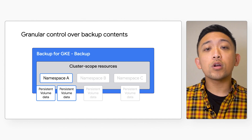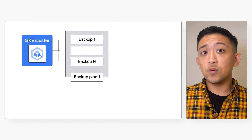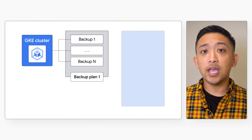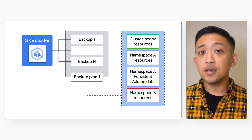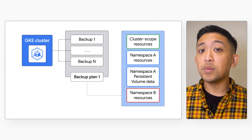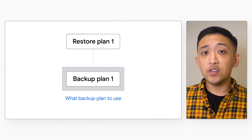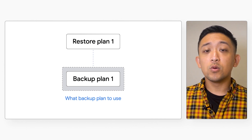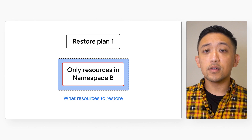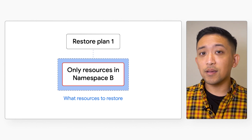With Backup for GKE, you can back up all cluster and namespace resources while also backing up stateful data in persistent volumes, or perform more granular backups for a selected set of namespaces. Each individual backup takes its shape from a backup plan that you create, which defines the scope of your backups. These backups can be scheduled on a regular cadence or performed manually ad hoc. When the time comes to restore, each restore references a restore plan, which defines what backup plan to use and what resources to restore. Restores themselves can also be granular — restoring either an entire backup or just a subset.